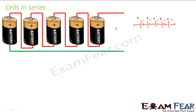Suppose in a circuit we have some 10 cells connected in series — what would be the effective EMF of that circuit? For example, let us say each of these 5 cells has an EMF of E1, E2, E3, E4, and E5. What would be the equivalent or effective EMF of the circuit due to these 5 cells connected in series? Let us try to calculate that.